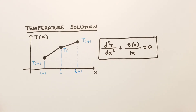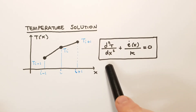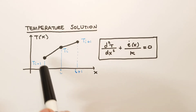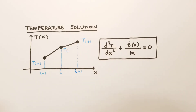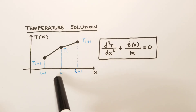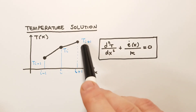Our objective is to discretize and obtain a numerical solution to, for example, the steady one-dimensional conduction equation where thermal conductivity k is constant and there is some heat generation that depends on space. Thanks to numerical methods we have the temperature at each grid point: at a generic point i the temperature is T subscript i, at position i minus 1 it is T_{i-1}, and at position i plus 1 it is T_{i+1}.